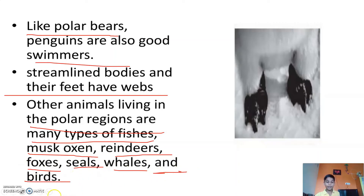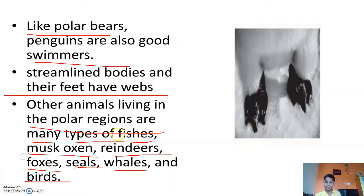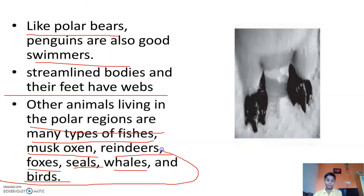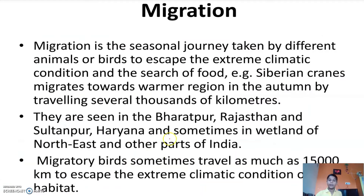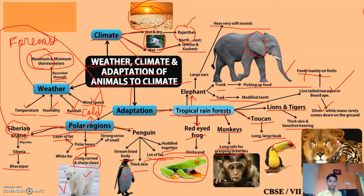Other animals living in the polar regions are many types of fishes, musk ox, reindeer, foxes, seals, whales, and birds. These were the examples of polar regions.